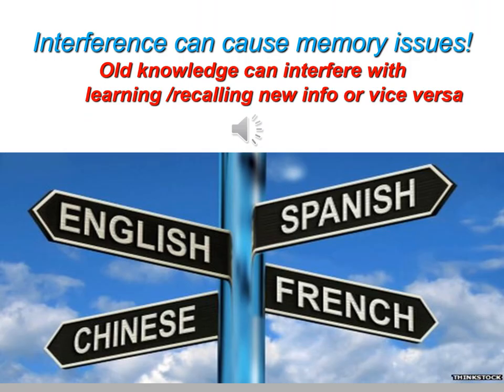Interference is another reason we can sometimes fail to retrieve information. Old knowledge can interfere with learning new knowledge, or sometimes vice versa. For example, if you learned Spanish in high school and are now attempting French, some students find their Spanish remains strong but it's difficult to learn French, while others learn French readily but have difficulty recalling Spanish. Interference can affect us in various subject areas, not only language learning.